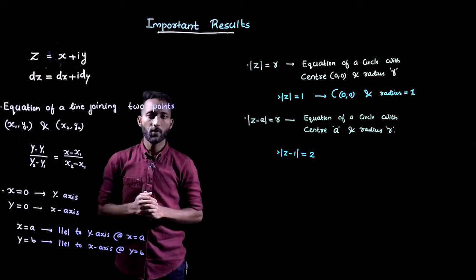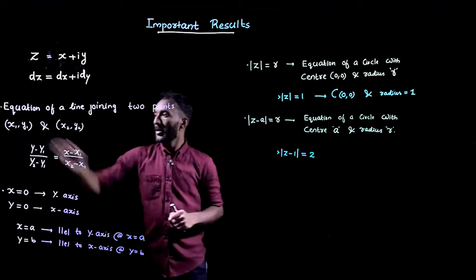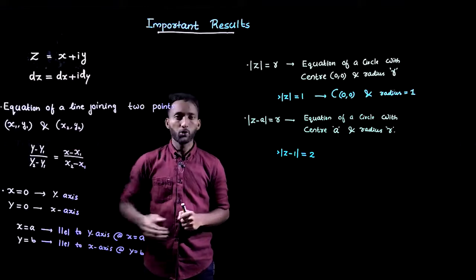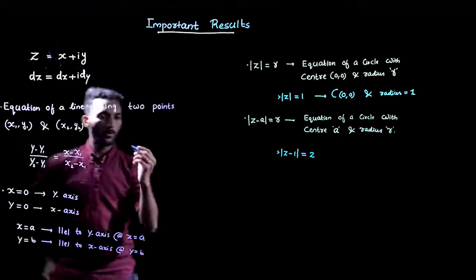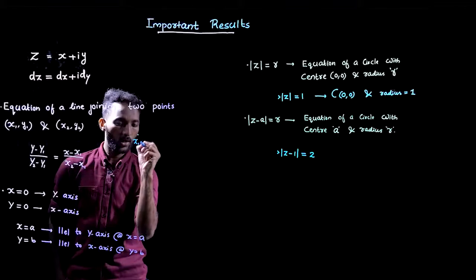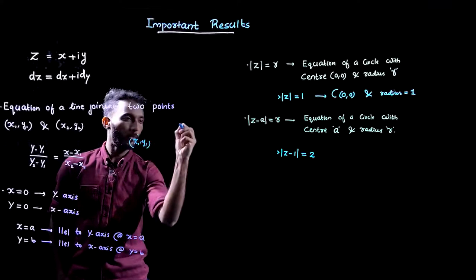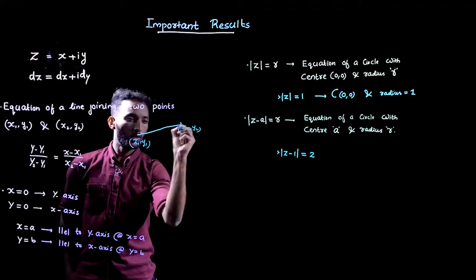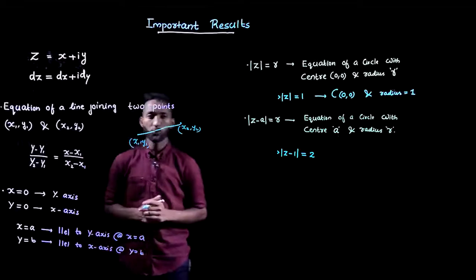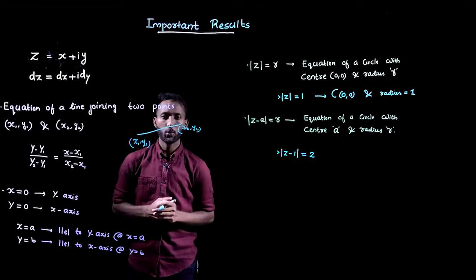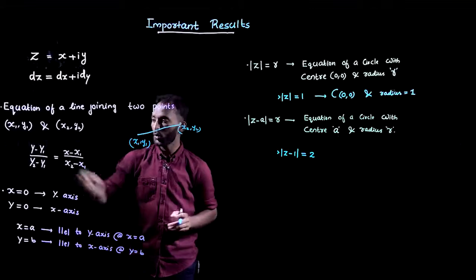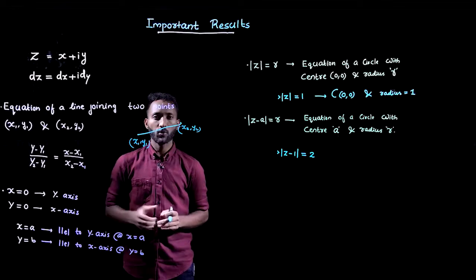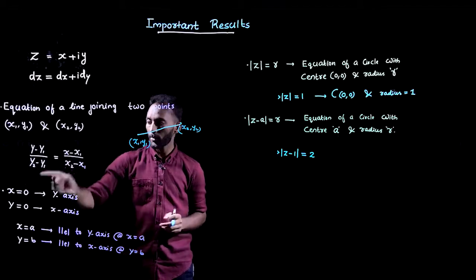The next result is the equation of a line joining two points (x1, y1) and (x2, y2). Suppose we have two points: first point is (x1, y1) and second point is (x2, y2). The equation of a line joining these two points is given by: (y minus y1) divided by (y2 minus y1) equals (x minus x1) divided by (x2 minus x1).